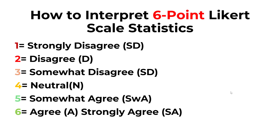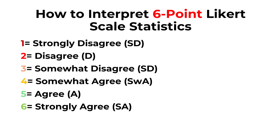The first thing we need to do is to code the different Likert scale anchors: one corresponding to strongly disagree, two to disagree, three to somewhat disagree, four to neutral, and so on. We assign lower values to negative labels and higher values to positive labels.